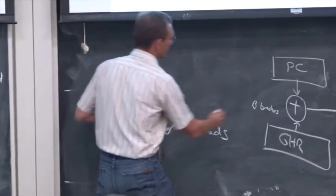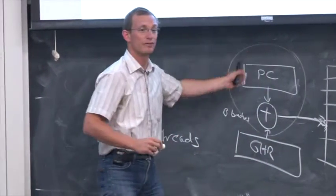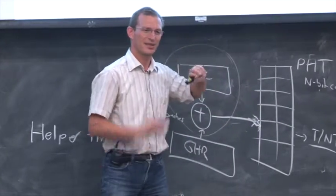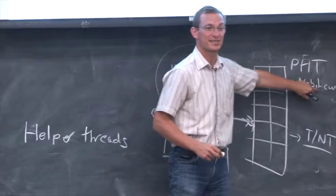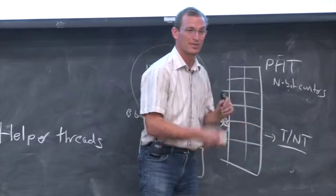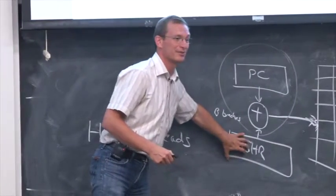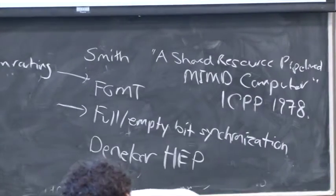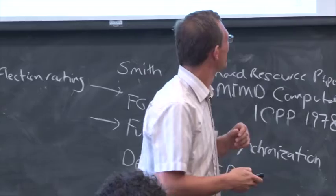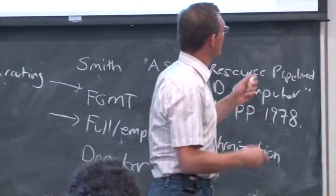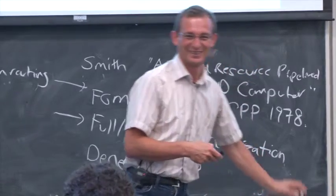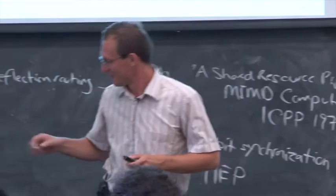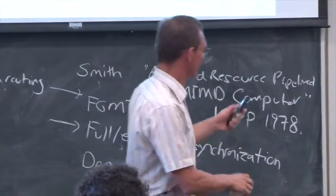They also added run-ahead on cache miss. When the oldest instruction encounters a cache miss, the processor checkpoints architectural state and enters run-ahead mode, speculatively pre-executing instructions to generate prefetches. In Sun Rock's version, instead of marking dependent instructions invalid and dropping them, dependent instructions are deferred to a special queue. A behind thread executes those deferred dependent instructions when their data becomes available, so the pipeline doesn't need to be flushed.